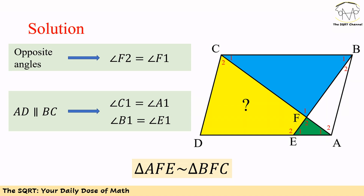To show similarity, remember that AD and BC are parallel. Because of these parallel lines, angle F1 equals F2, angle A1 equals C1, and angle B1 equals E1. Therefore, the blue and green triangles are similar.